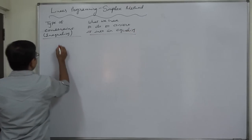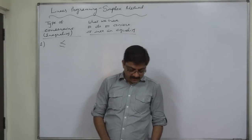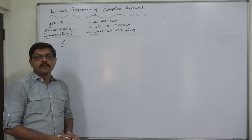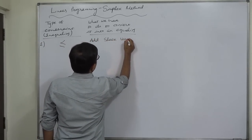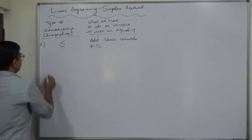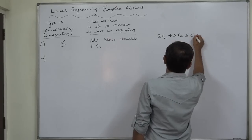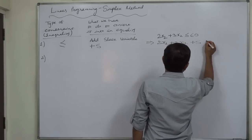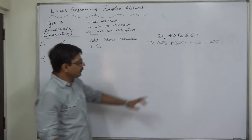The first kind of inequality uses the less than or equal to sign. For example: 2x1 + 3x2 ≤ 60. To convert this into an equality, we add a slack variable. So it becomes: 2x1 + 3x2 + s = 60.